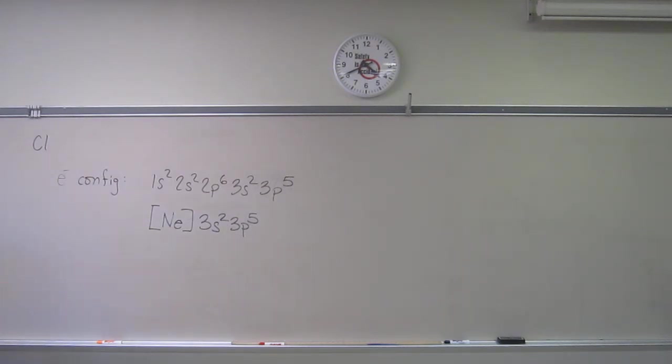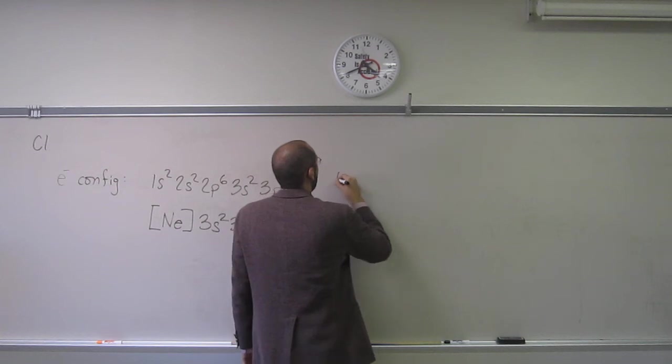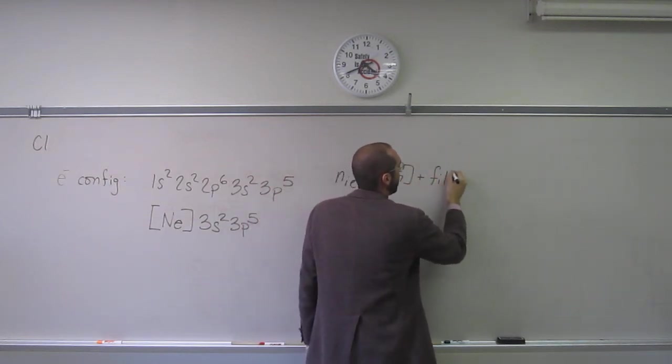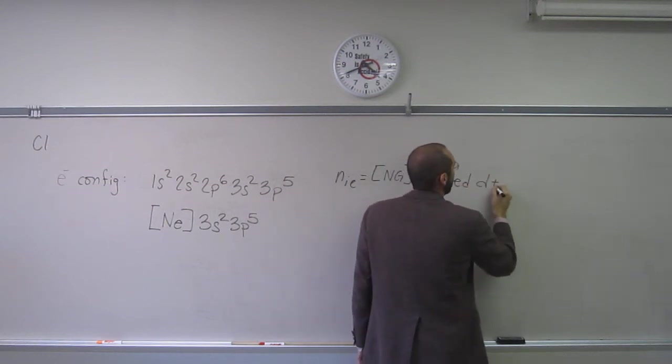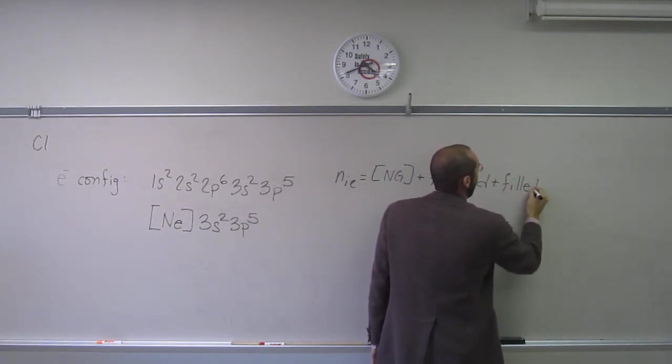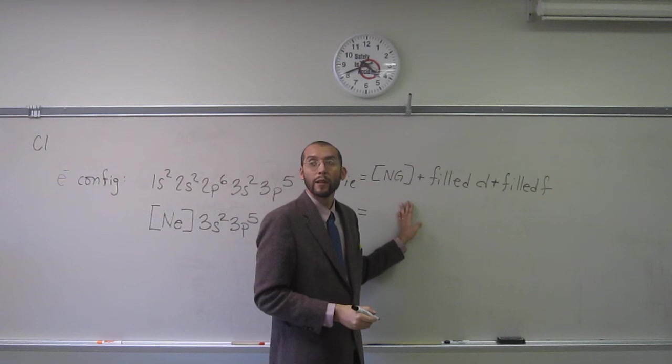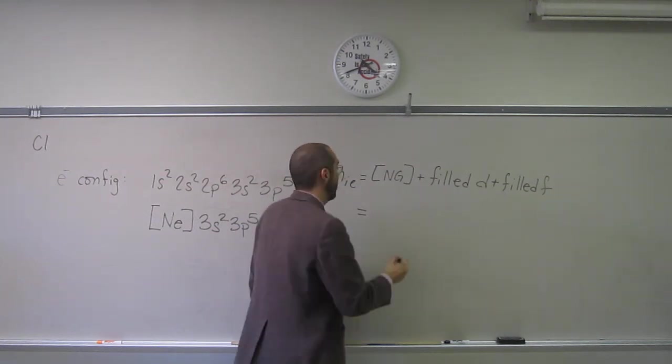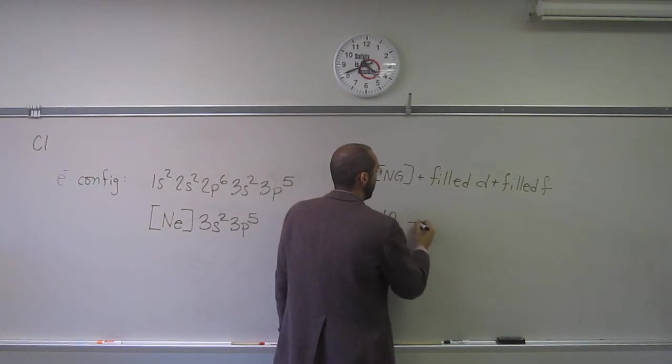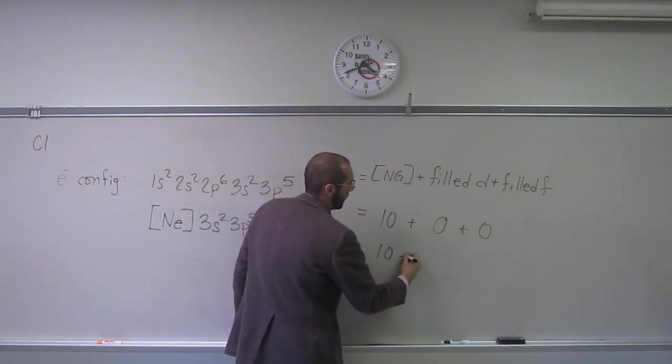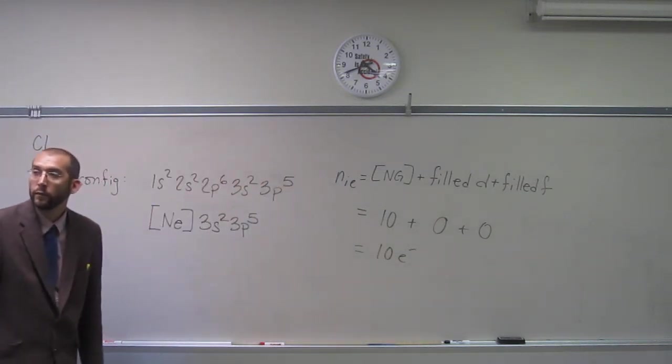Okay, they wanted us now to figure out the number of inner electrons. So remember how I taught you how to do that? It's the number of electrons that the noble gas contains, plus the number of filled d, plus filled f's. And so, noble gas, what's the noble gas before it? Neon, right? It contains how many electrons? Ten. Very good. And do we have any filled d's? No. Zero. Filled f's? No. Zero. So the number of inner electrons is ten electrons. Does that make sense?